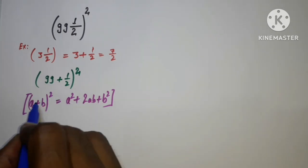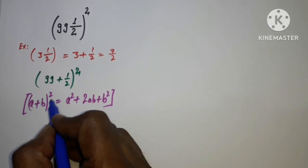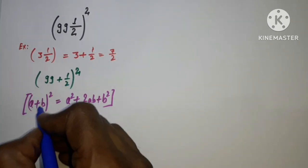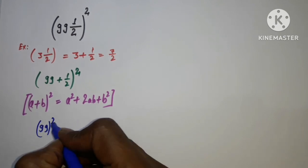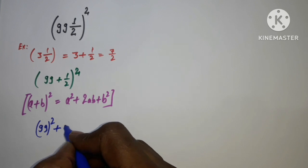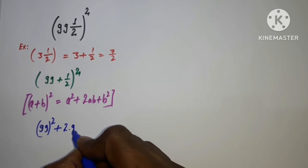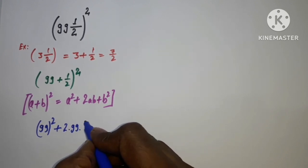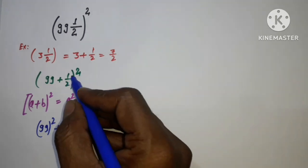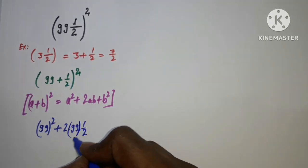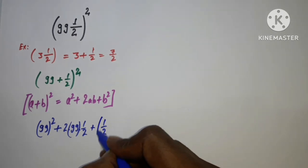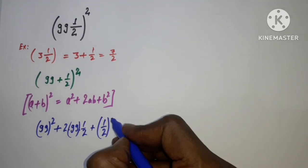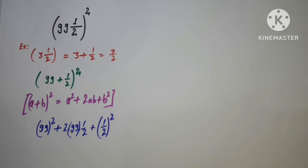I'm considering 99 as a and 1/2 as b. So this can be written as (99)² + 2(99)(1/2) + (1/2)². We have a², 2ab, and b² terms in the expansion.